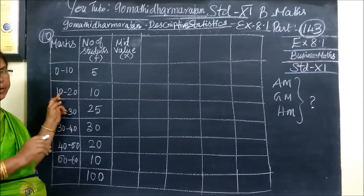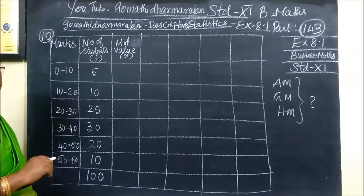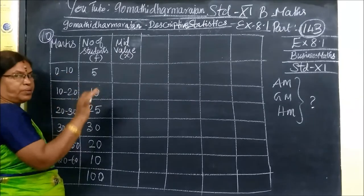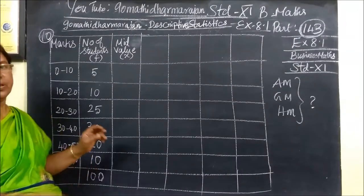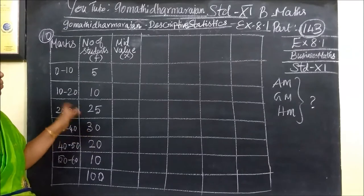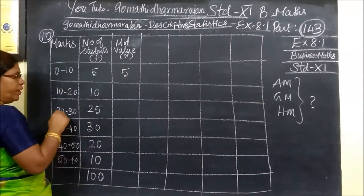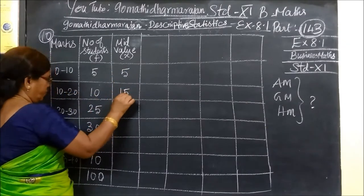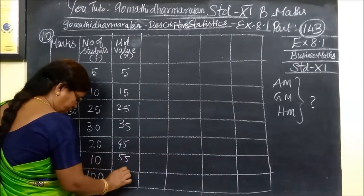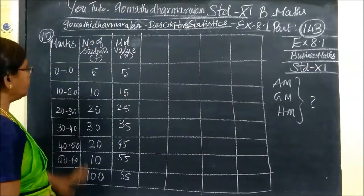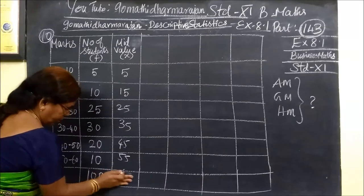That's what we need to do. Now we need to convert to a continuous class interval. Look at the class intervals: 5, 15, 25, 35, 45, 55, 65. So we have 15, 25, 35, 45, 55, 65.